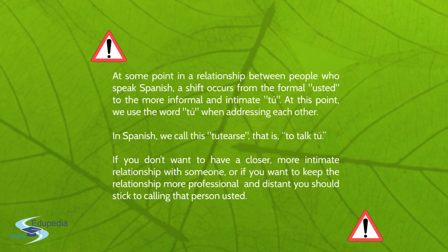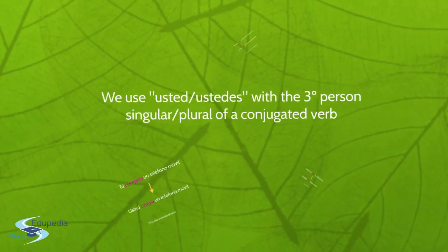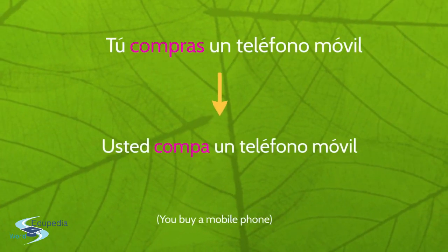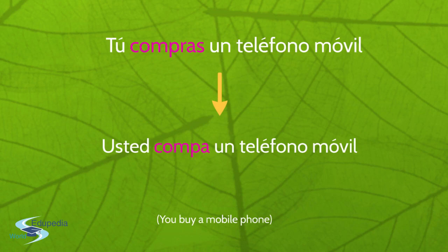Other people you don't know should be addressed with usted. We use usted/ustedes with the third person singular or plural of a conjugated verb. For example, if you know the person: Tú compras un teléfono móvil — you buy a mobile phone. If you don't know the person: Usted compra un teléfono móvil. Tú is conjugated with the second person singular, while usted is conjugated with the third person singular.